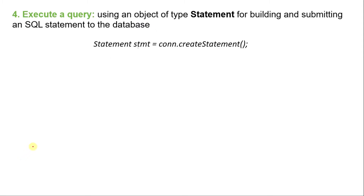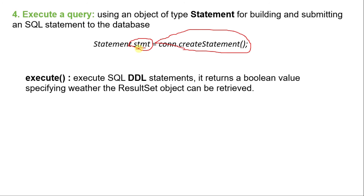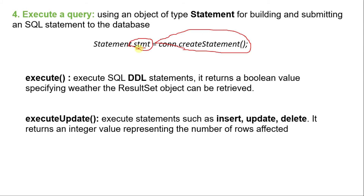Once you create a connection, you can execute your queries with the help of an object of the Statement class using the createStatement method. To execute queries, we have three different methods. If you want to execute DDL statements like CREATE or DROP, use the execute method — it returns either true or false. If you want to execute queries like INSERT, UPDATE, or DELETE, use the executeUpdate method, which returns an integer representing how many rows were affected.